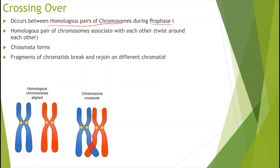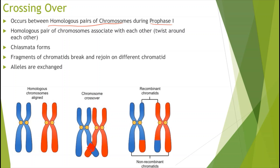What then happens is that fragments of chromatids break and rejoin on a different chromatid. For example, a blue fragment breaks off and rejoins on the red chromatid, and a red fragment breaks and rejoins on the blue chromosome. As shown in the diagram, fragments have exchanged between the blue and red chromatids — this means alleles are exchanged, resulting in new combinations of alleles and therefore genetic diversity.